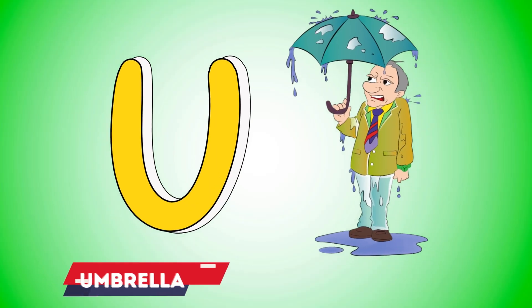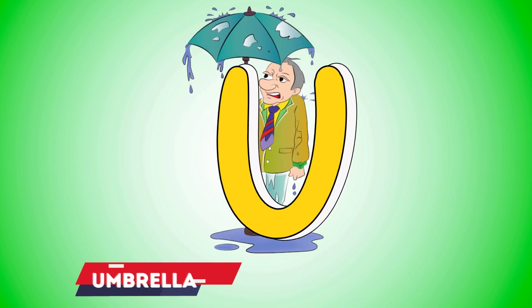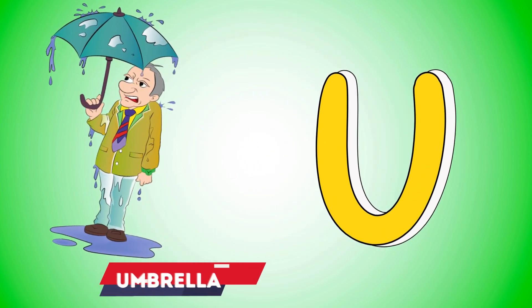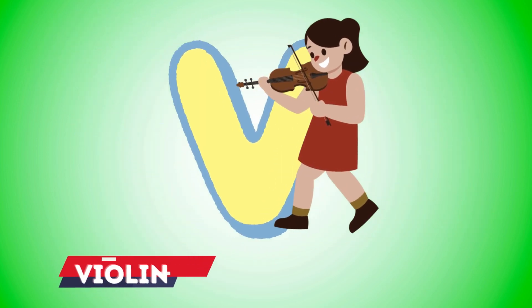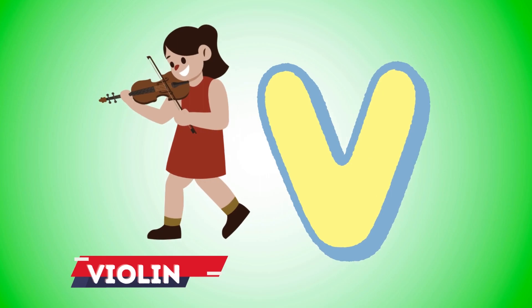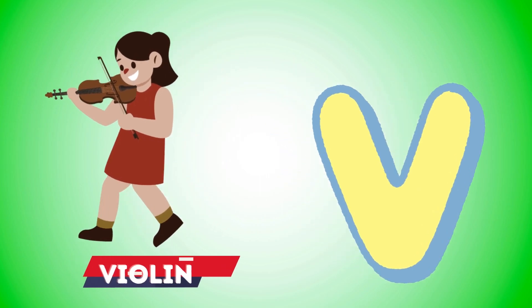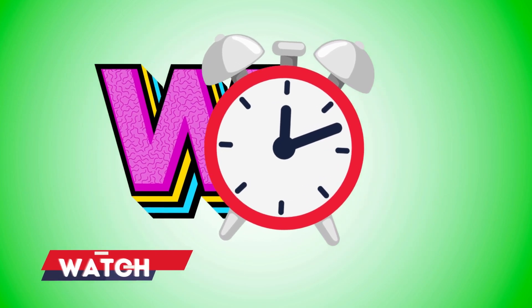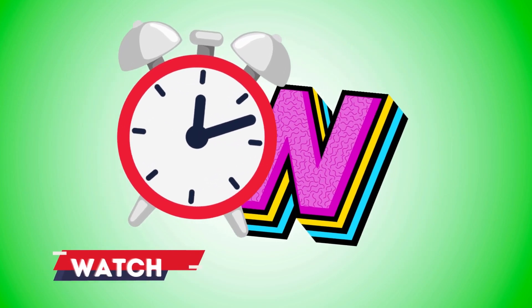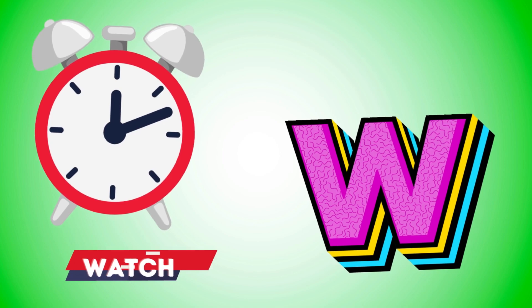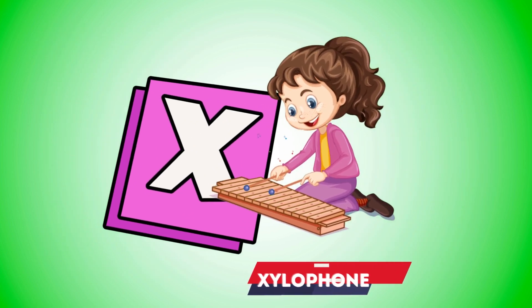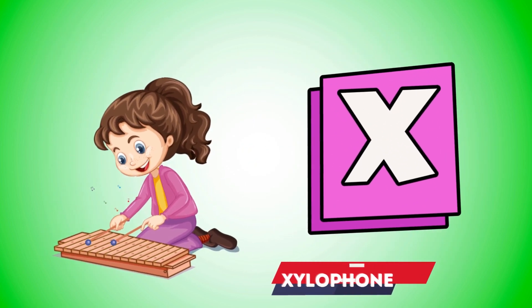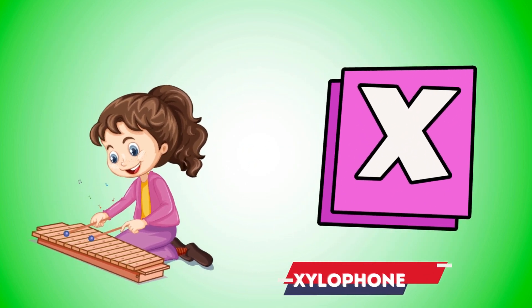U is for umbrella, u-u-umbrella. V is for violin, v-v-violin. W is for watch, w-w-watch. X is for xylophone, z-z-xylophone.